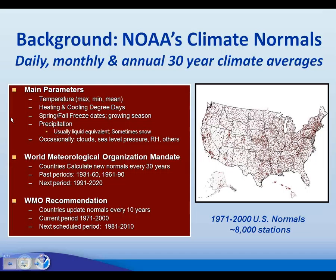The reason that we do normals is because we're mandated to do so by the World Meteorological Organization — a mandate to do normals every 30 years covering a 30-year period. It was first done for 1931–60, then 1961–90, and the next mandated WMO period is 1991–2020. The WMO also recommends that member nations recompute their normals every 10 years. The current period is 1971–2000, but soon we will release the 1981–2010 installment, for which we did normals for about 8,000 stations.